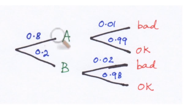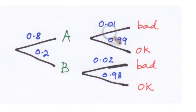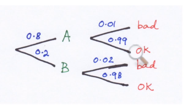Here are all the widgets made by machine A — some of them are bad and some are okay. Here are all the widgets made by B — some are bad and some are okay. We write the probabilities of ending up bad or good given that the object was made by machine A or machine B.